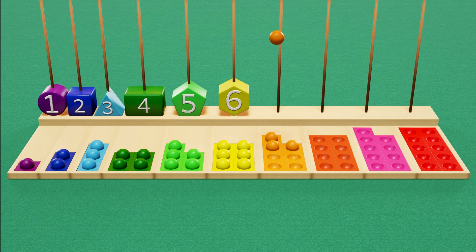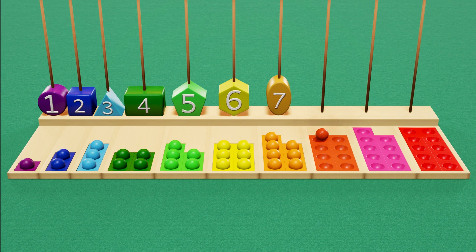One, two, three, four, five, six, seven. Here's a light orange oval with number seven.